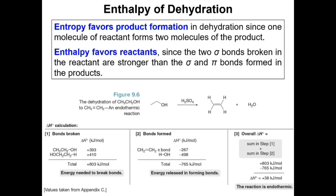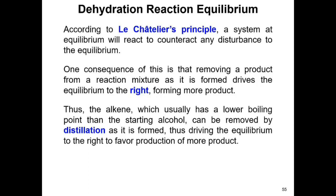Looking at the thermodynamics of dehydration, entropy favors product formation because one molecule of reactant turns into two molecules of product. On the other hand, enthalpy favors the reactants because the overall reaction is endothermic — energy required to break bonds is greater than energy released in forming bonds. According to Le Chatelier's principle, removing a product drives the equilibrium to the right. The alkene product has a lower boiling point than the starting alcohol, so it can be separated by simple distillation, driving the equilibrium toward more product formation.